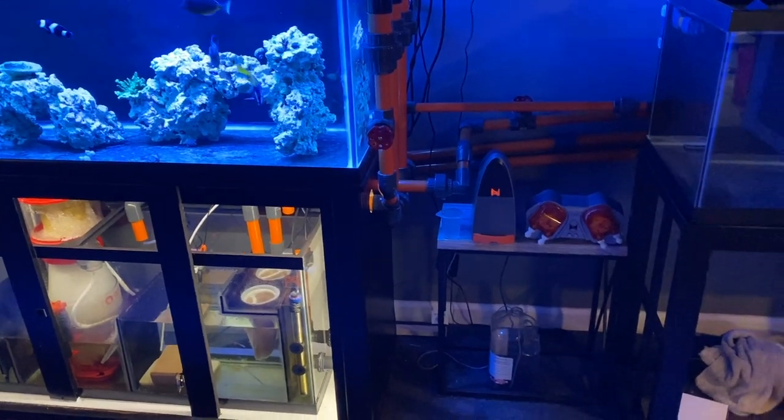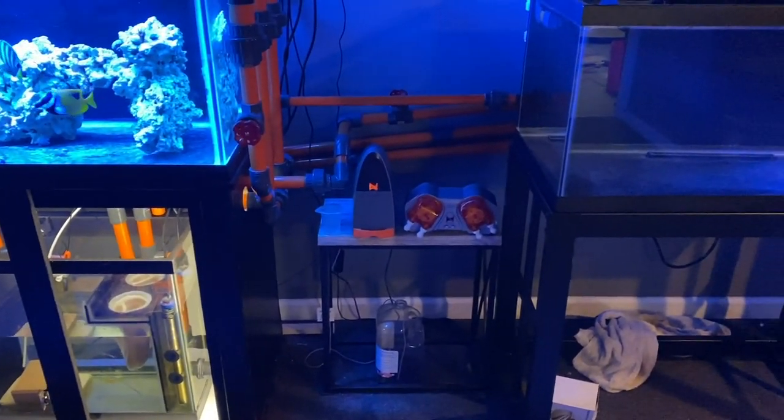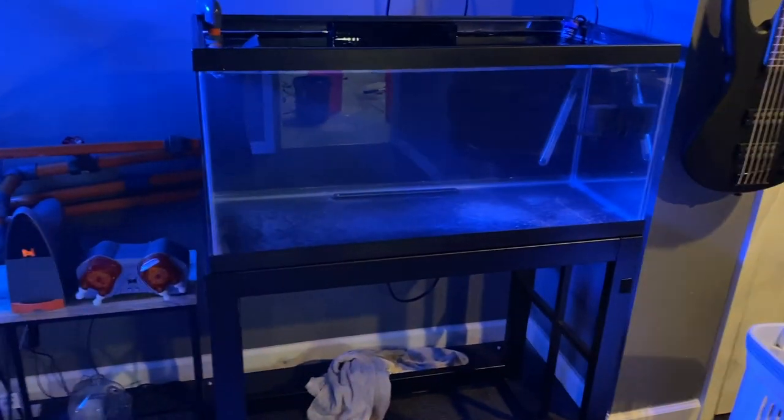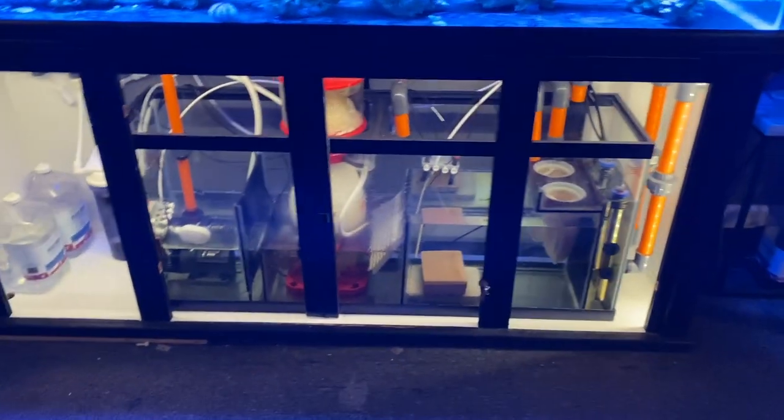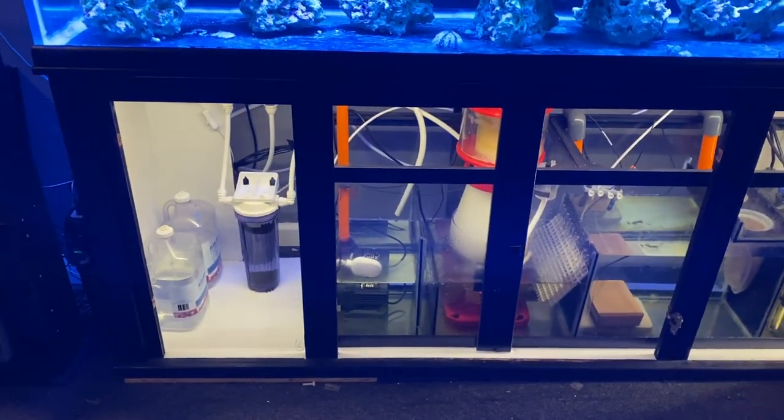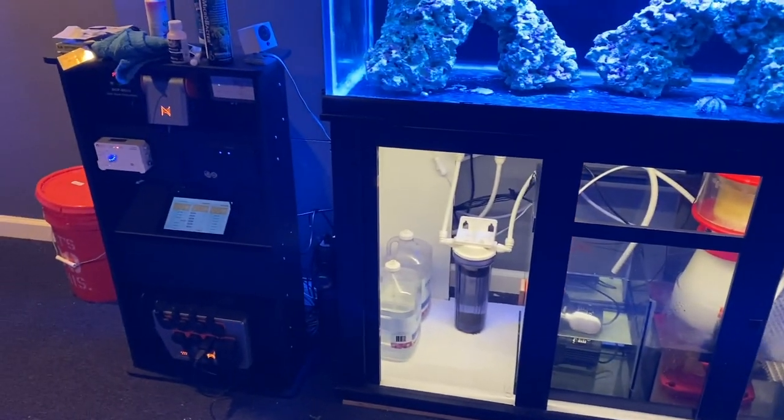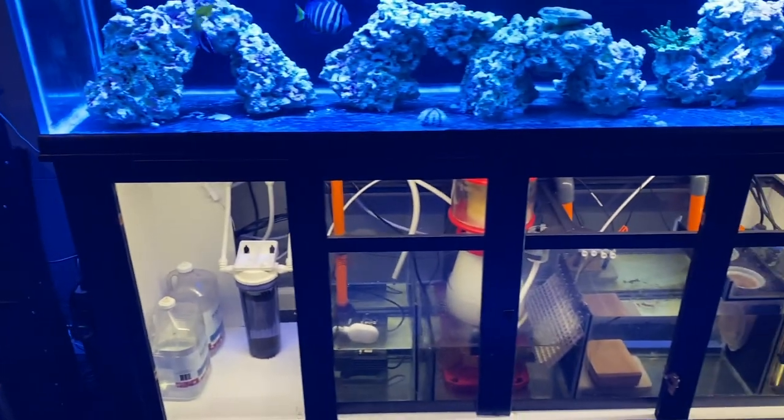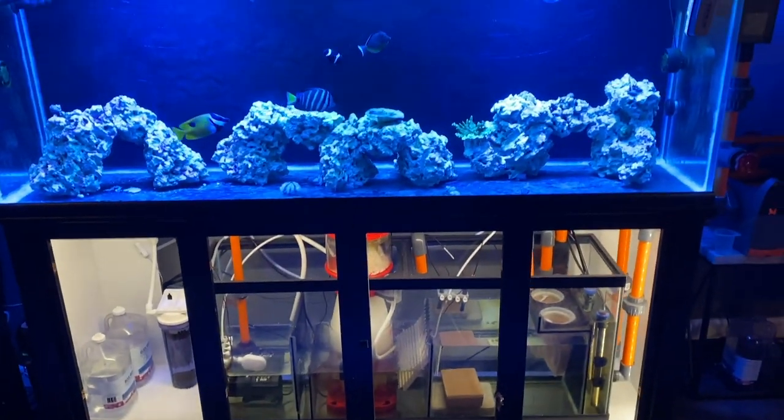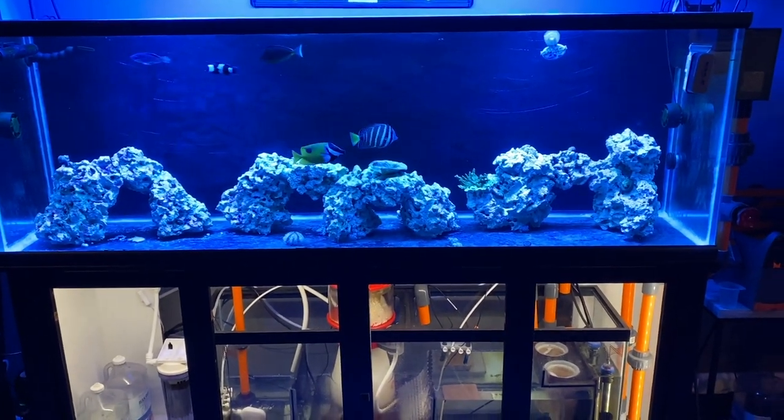And once it's up and running, I'm going to let it run for a couple of weeks to let the system balance out. And then I'm going to tear down the 20 gallon and bring all the livestock down here and put it in the 40 breeder. So that's all for today's video. I hope you guys really enjoyed it. It's really exciting to be in the final phases of this build, and I can't wait to get it all wrapped up and really get to focusing on growing corals and growing this system and letting it mature.